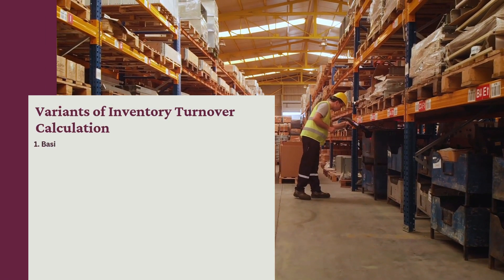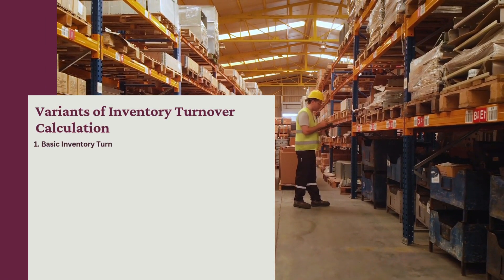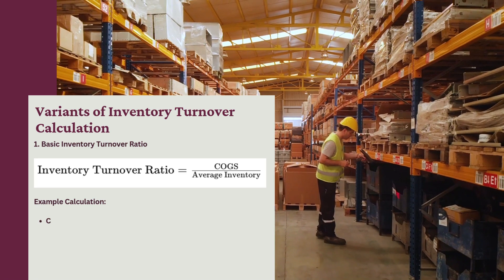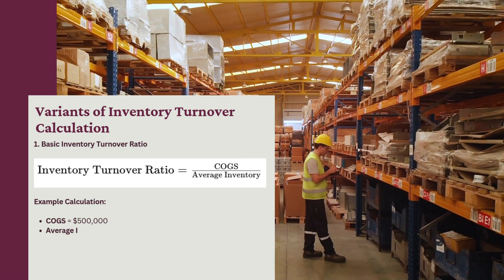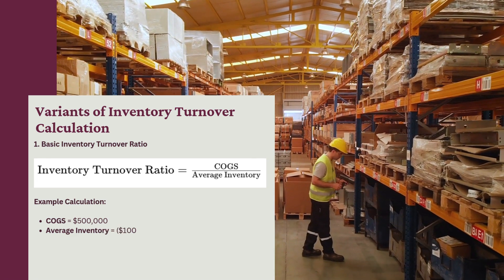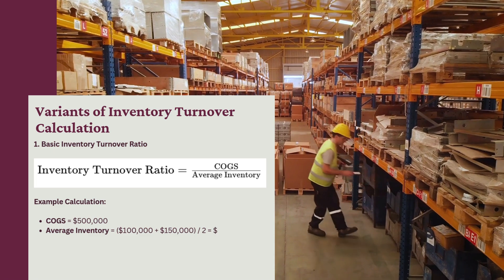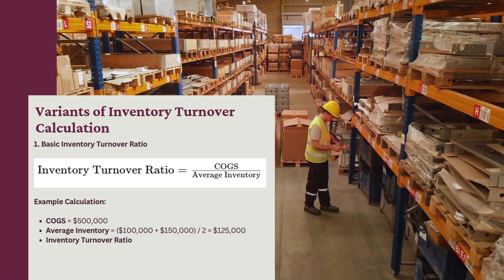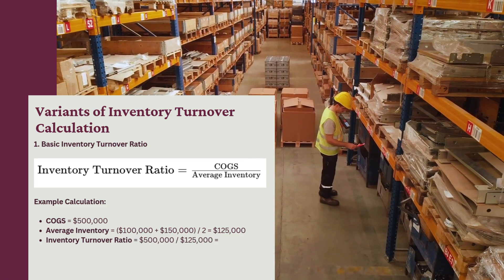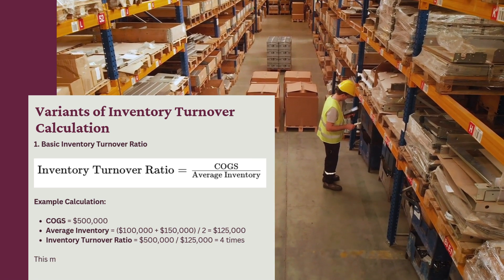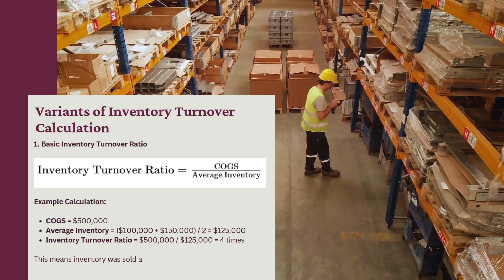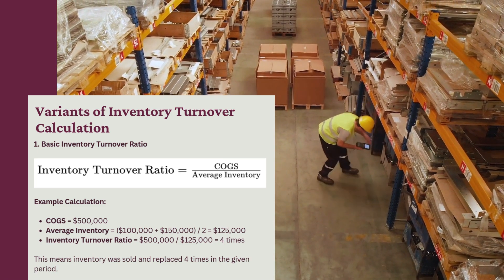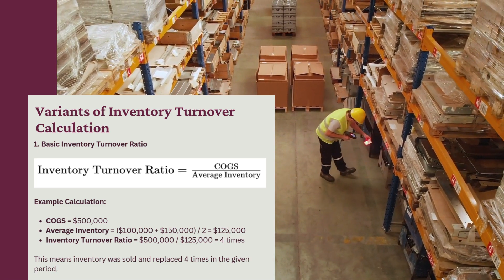Variants of inventory turnover calculation. First, the basic inventory turnover ratio: Inventory Turnover Ratio = COGS / Average Inventory. Example calculation: COGS = $500,000; Average Inventory = ($100,000 + $150,000) / 2 = $125,000; Inventory Turnover Ratio = $500,000 / $125,000 = 4 times. This means inventory was sold and replaced 4 times in a given period.